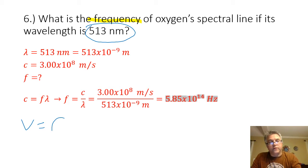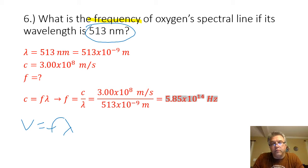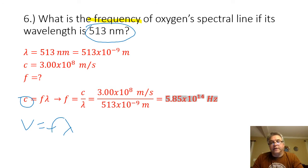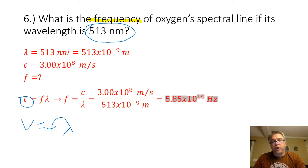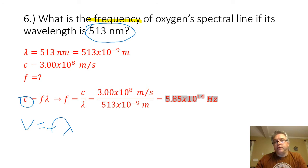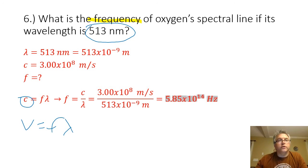Velocity equals frequency times wavelength — just keep in mind that we are really working with the same formula. We just have a special value for the velocity because that is the speed of electromagnetic waves in a vacuum. When I do all that math out, I get a frequency of 5.85 times 10 to the 14th hertz.